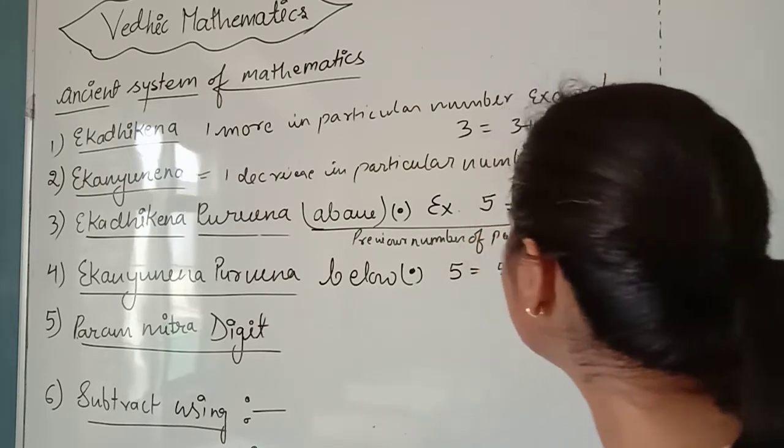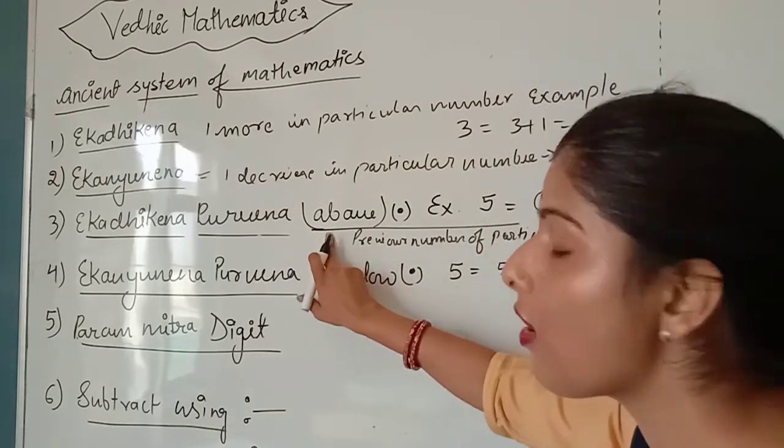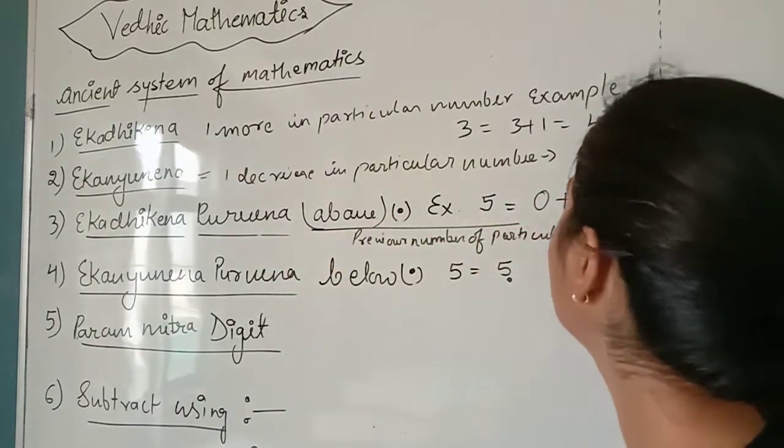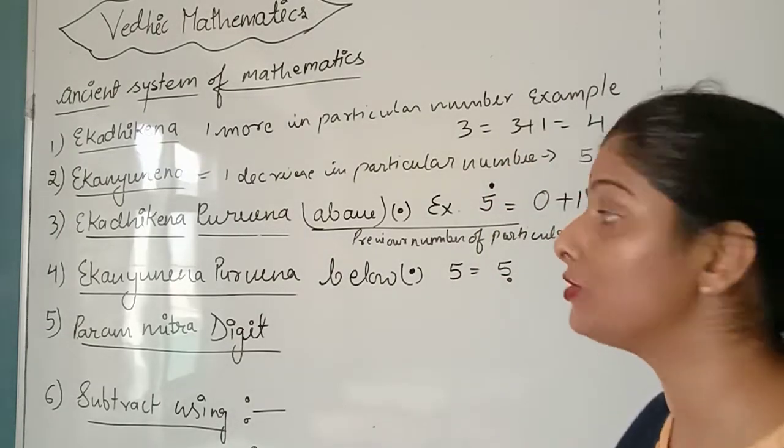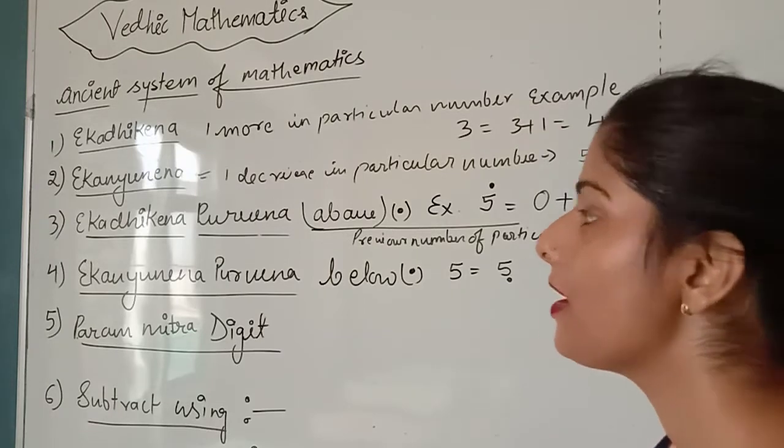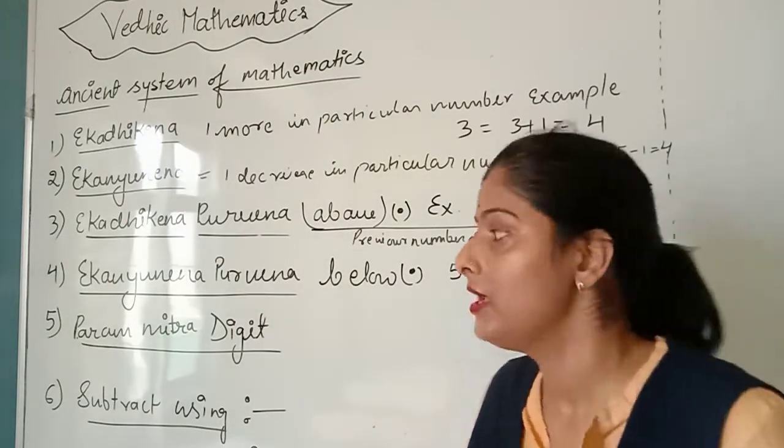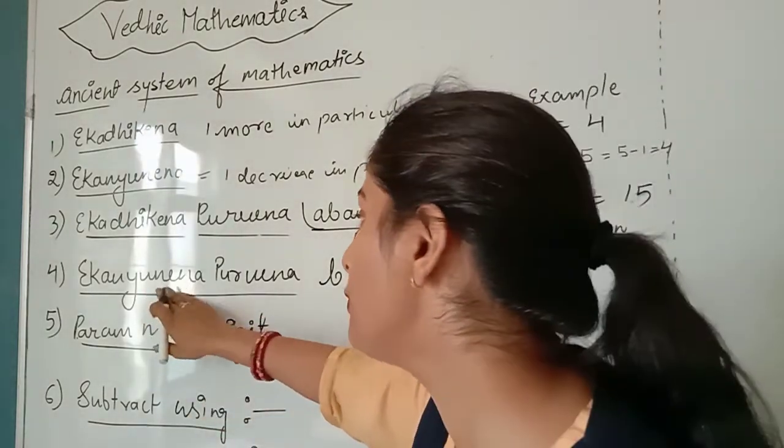In Ek Adhiken, above one we put a dot. This dot means we have to add one. Similarly, for Ek Adhiken Purvin,